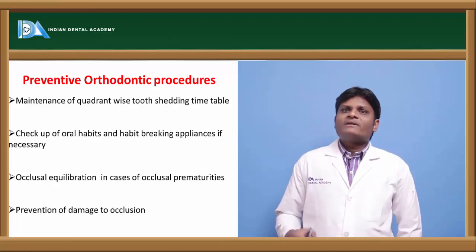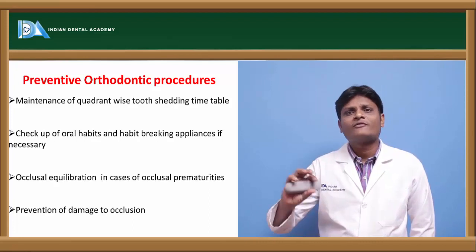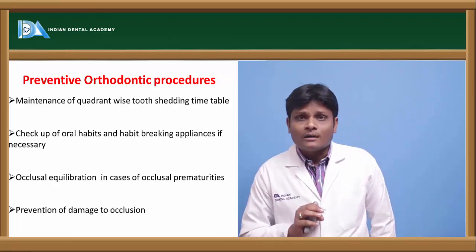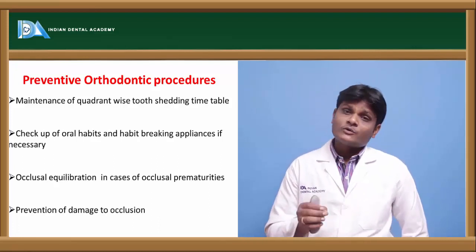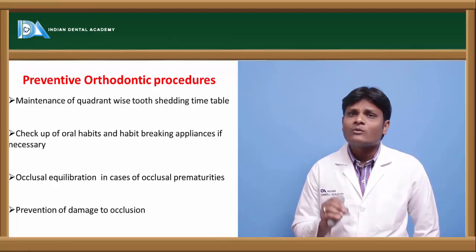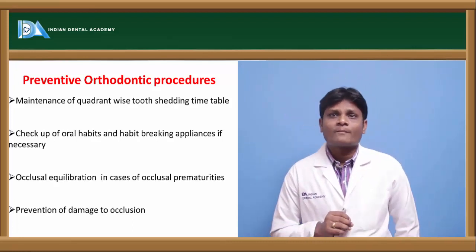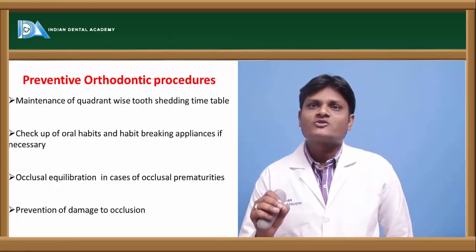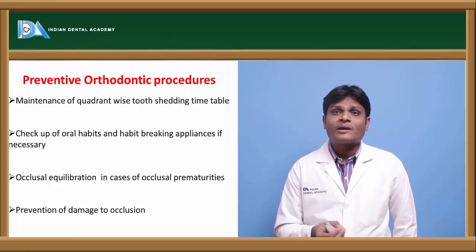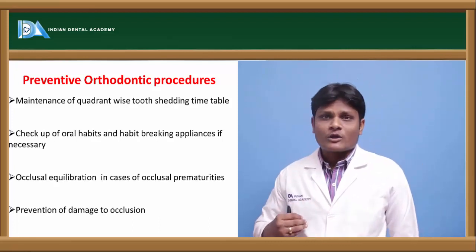Preventing damage to the occlusion: for example, in orthopedics, if a patient has scoliosis — a vertebral column disorder due to lateral bending — orthopedicians use Milwaukee braces, which take support from craniofacial skeletal structures to correct vertebral column alignment. These Milwaukee braces might cause damage to the dentition and orofacial structures. Therefore, sufficient precautions and guidelines prescribed by the orthopedicians should be followed to prevent any damage to the dentition and orofacial structures while using such therapeutic procedures.